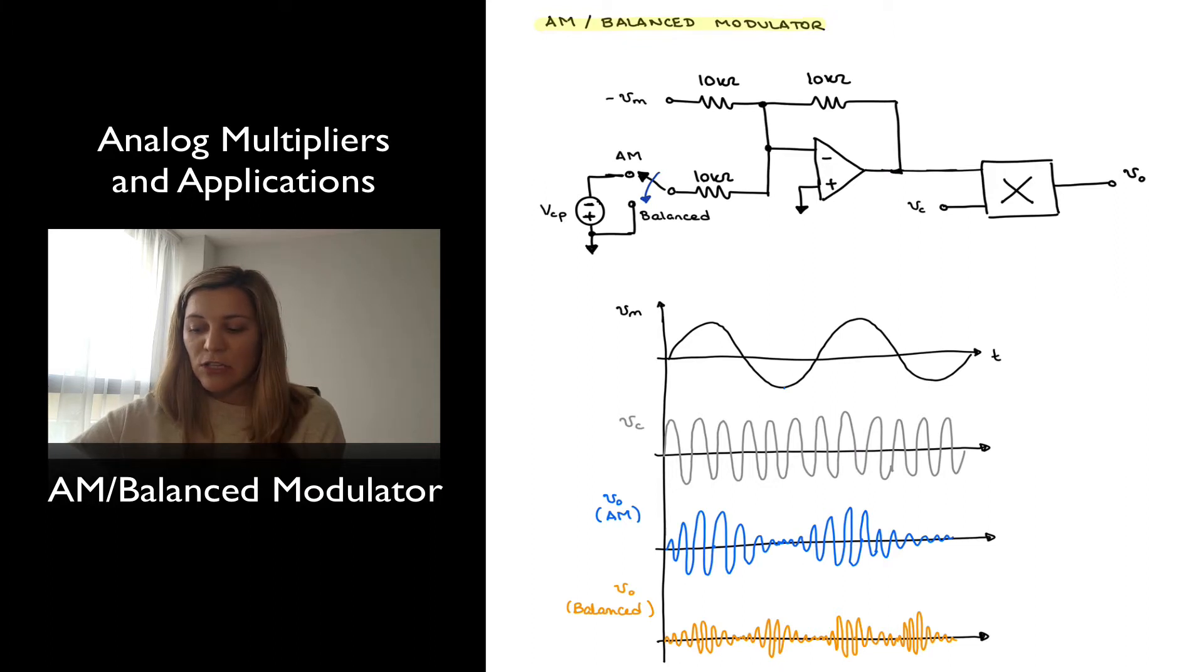The first position is to add a DC offset to our modulating signal, so it will be for AM modulation. And the second position that is labeled balanced, it basically connects that input to ground.